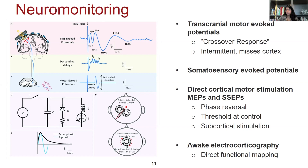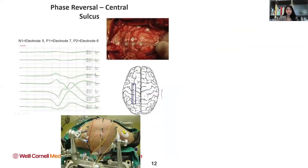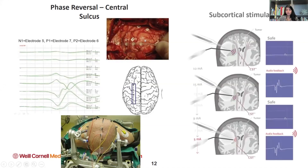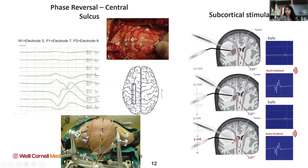Awake electrocorticography allows us to do direct functional mapping. With someone awake, we can stimulate and test for speech areas, stimulate a motor area, and keep testing function to find exactly where the eloquence is. These are examples of what patients look like — these are scalp electrodes. Strip electrodes look like a small clear strip with small electrodes on it. We can use little numbered markers to map out areas of functionality we're trying to avoid. This is an example of subcortical stimulation, where we stimulate near the motor tract and get a sense of how far we are from it — for example, if we're getting a positive signal at 15 milliamps, we know we're probably just a couple of millimeters away.